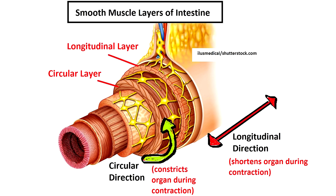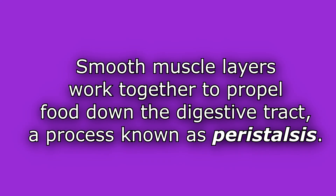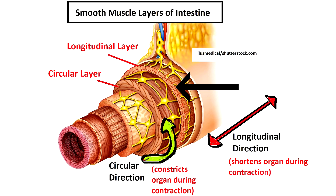Let's talk about the layers of smooth muscle, because it will often develop in layers within an organ to help that organ move in different ways so it can perform its job. For example, in most of the digestive system, smooth muscle cells are formed into two layers with different orientations which work together to propel food down the digestive tract — a process known as peristalsis. You have a longitudinal layer — the word starts with 'long' to help you remember that these cells run along the whole length of the organ — as the outermost smooth muscle layer, helping it become shorter during contraction.